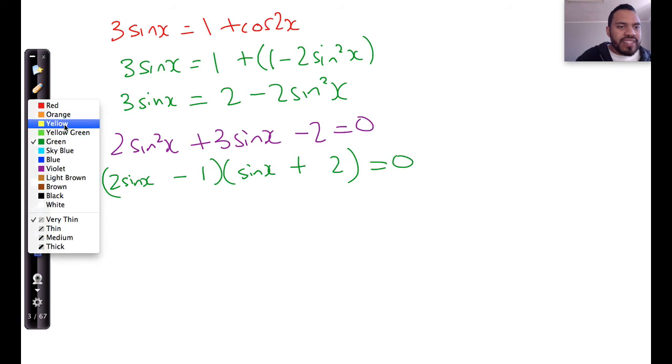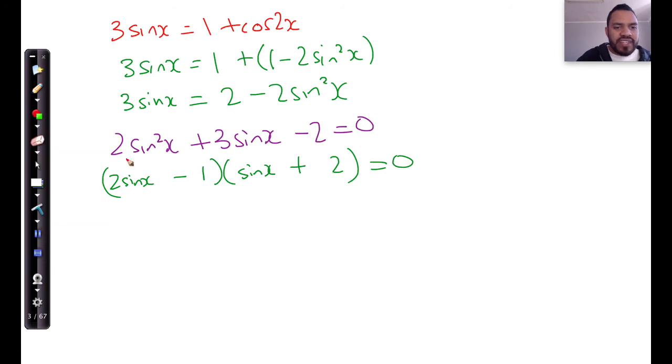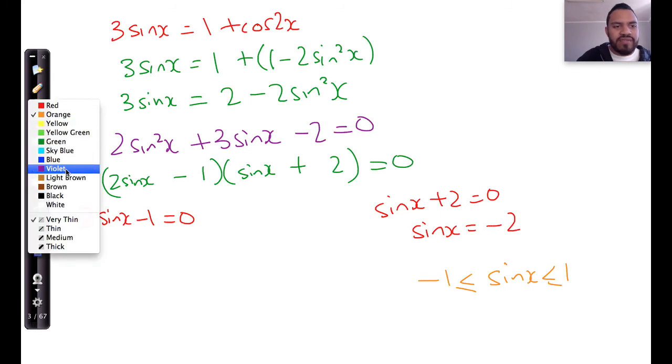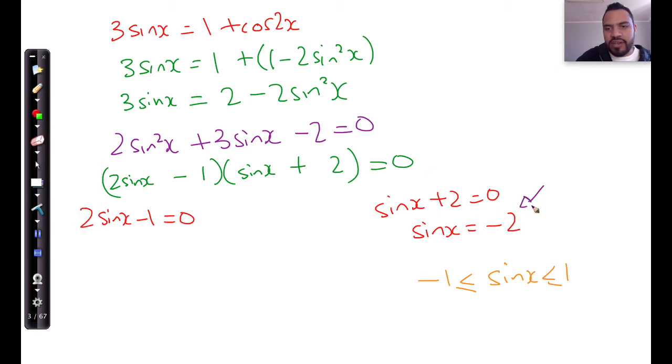Clearly over here, I can see that I'm going to come up with two solutions. The one is 2 sin x minus 1 is equal to 0. The other one is going to be sin x plus 2 equals 0, and that tells me that sin x has to equal negative 2. Now, since sin x is bounded always between 1 and minus 1, this solution over here that we find is invalid. So this here is not valid.